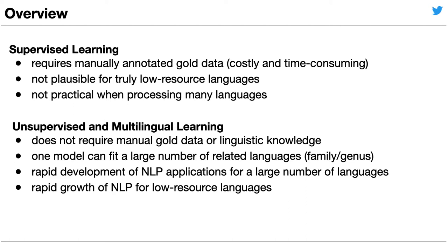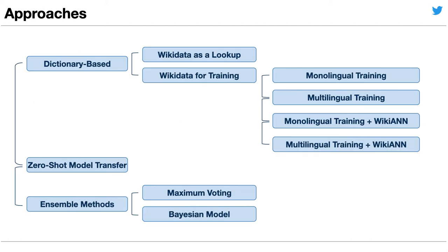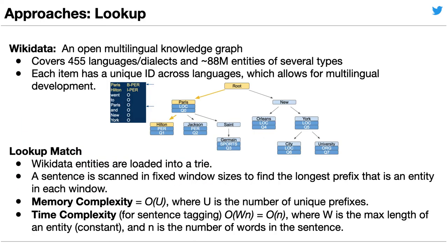This approach supports the rapid growth of NLP applications for low-resource languages. We apply three main approaches: dictionary-based, zero-shot model transfer, and ensemble methods. In the dictionary-based approach, we use cross-lingual entities in the multilingual knowledge graph Wikidata as a lookup.